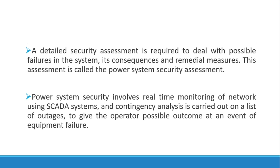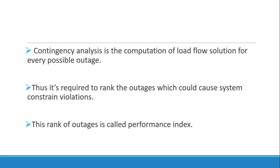A detailed security assessment is required to deal with possible failures in the system, their consequences, and remedial measures — this is called power system security assessment. It involves real-time monitoring using SCADA systems, and contingency analysis is carried out on a list of outages to give the operator possible outcomes in the event of equipment failure. Contingency analysis involves computing a load flow solution for every possible outage and ranking the outages that could cause system constraint violations. This ranking is called the performance index.